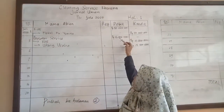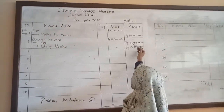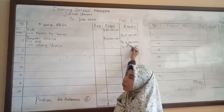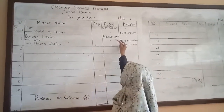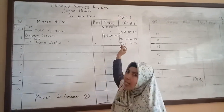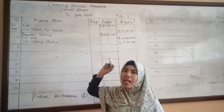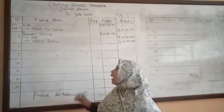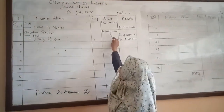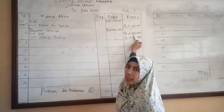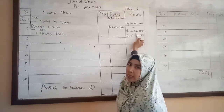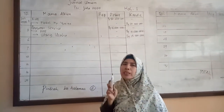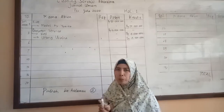Debit Rp16 juta, kemudian kreditnya Rp4 juta ditambah Rp12 juta. Transaksi setiap tanggalnya harus seimbang, ada posisi debit dan ada posisi kredit. Itulah yang namanya jurnal umum.